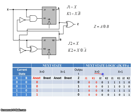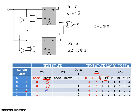Still looking at X equals 0, let's use J2 and K2 to find B_next. When J2=0 and K2=1, the output is reset to 0. When J2=0 and K2=0, the output holds its previous value. So for the four rows: J2=0, K2=1 → B_next=0; J2=0, K2=1 → B_next=0; J2=0, K2=0, B=0 → B_next=0; J2=0, K2=0, B=1 → B_next=1.